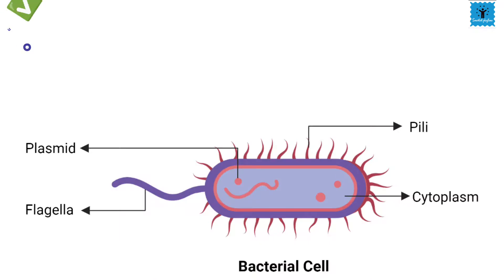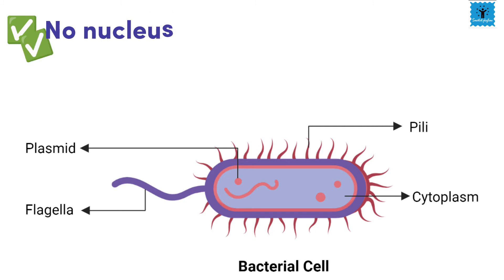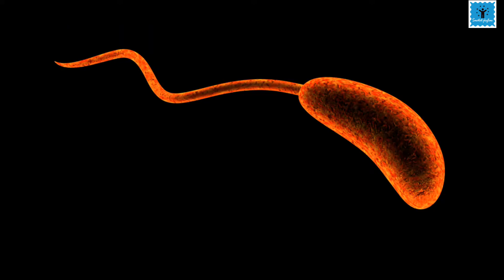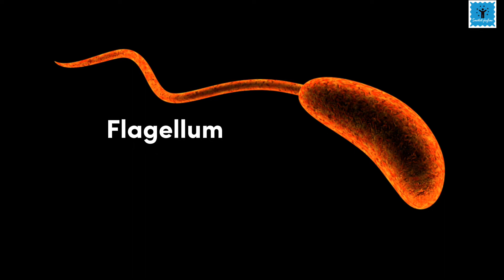Bacteria have a very simple cell structure. They have no nucleus and have a cell wall. They also have a thread-like structure in the cell wall called a flagellum, which helps in locomotion.